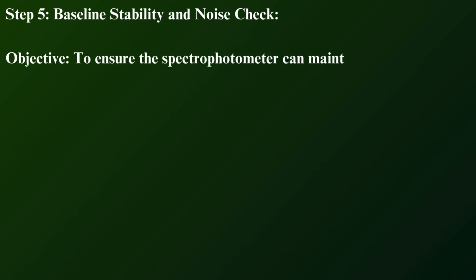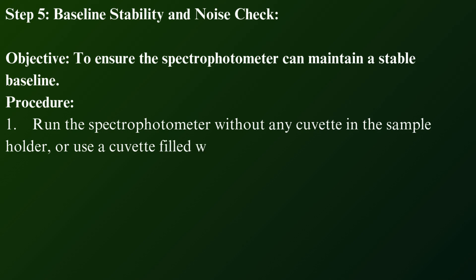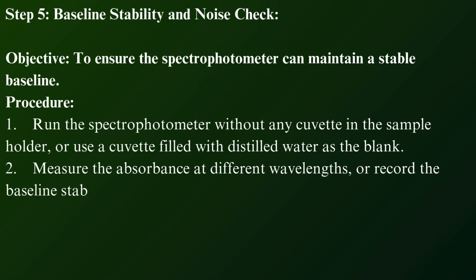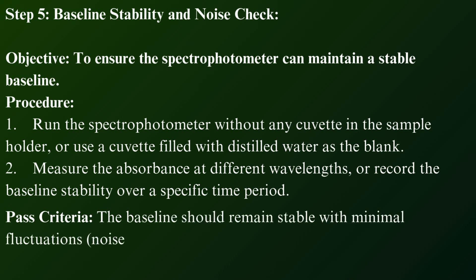Step 5: Baseline stability and noise check. Objective: To ensure the spectrophotometer can maintain a stable baseline. Procedure: Run the spectrophotometer without any cuvette in the sample holder, or use a cuvette filled with distilled water as the blank. Measure the absorbance at different wavelengths, or record the baseline stability over a specific time period. Pass criteria: The baseline should remain stable with minimal fluctuations.